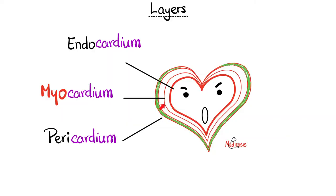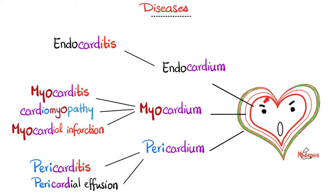Here's my endocardium, myocardium, and pericardium. From the inside out, which layer contains the cardiac valves? The endocardium. Infective endocarditis affects the endocardium, including the valves. As for rheumatic fever, it also involves the endocardium, but not just the endocardium — rheumatic fever can have pancarditis: endocardium, myocardium, and pericardium. Since both diseases can affect the endocardium, can they cause cardiac valvular murmurs? Yes, indeed.